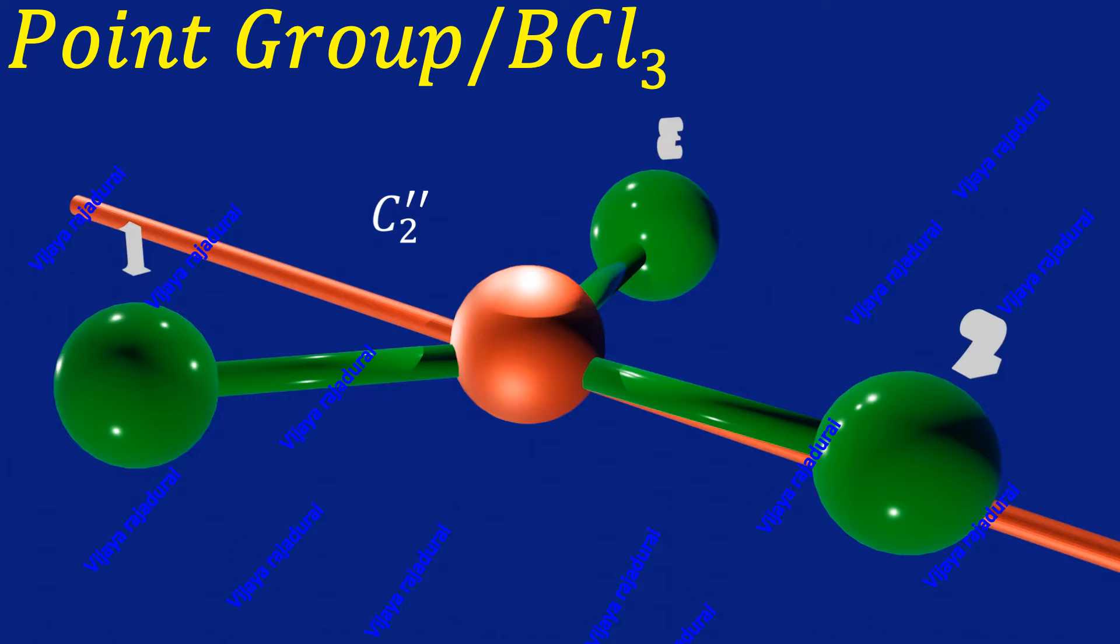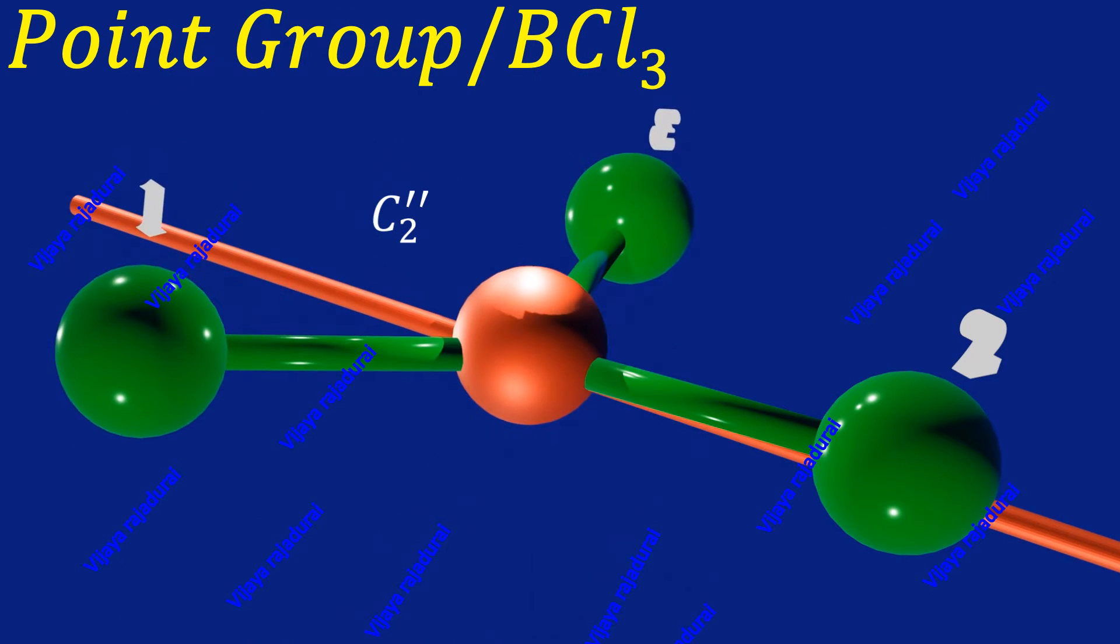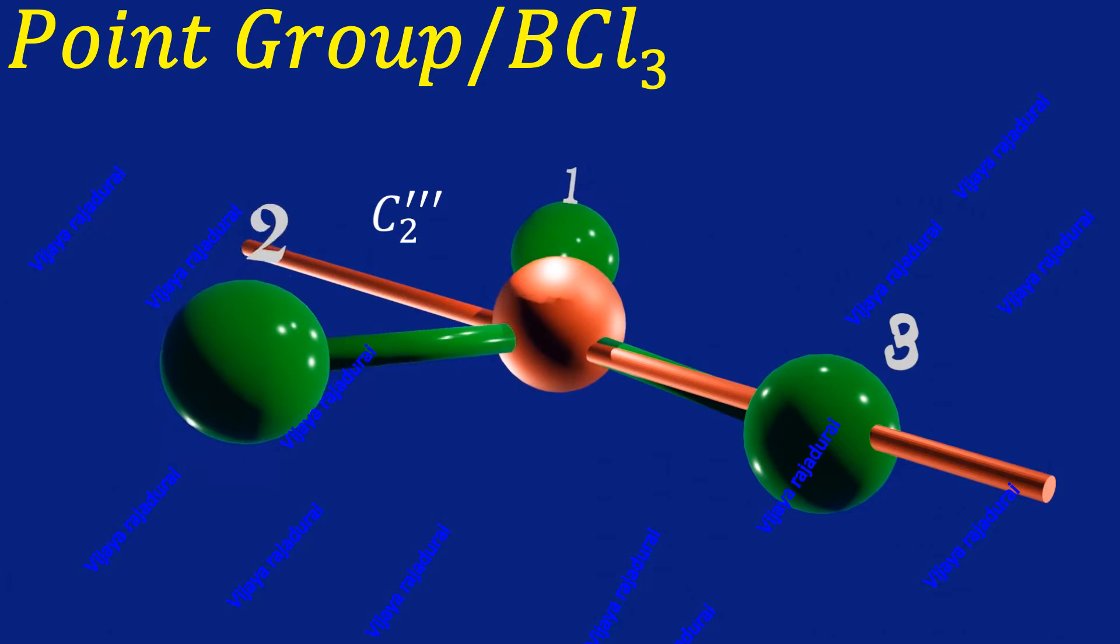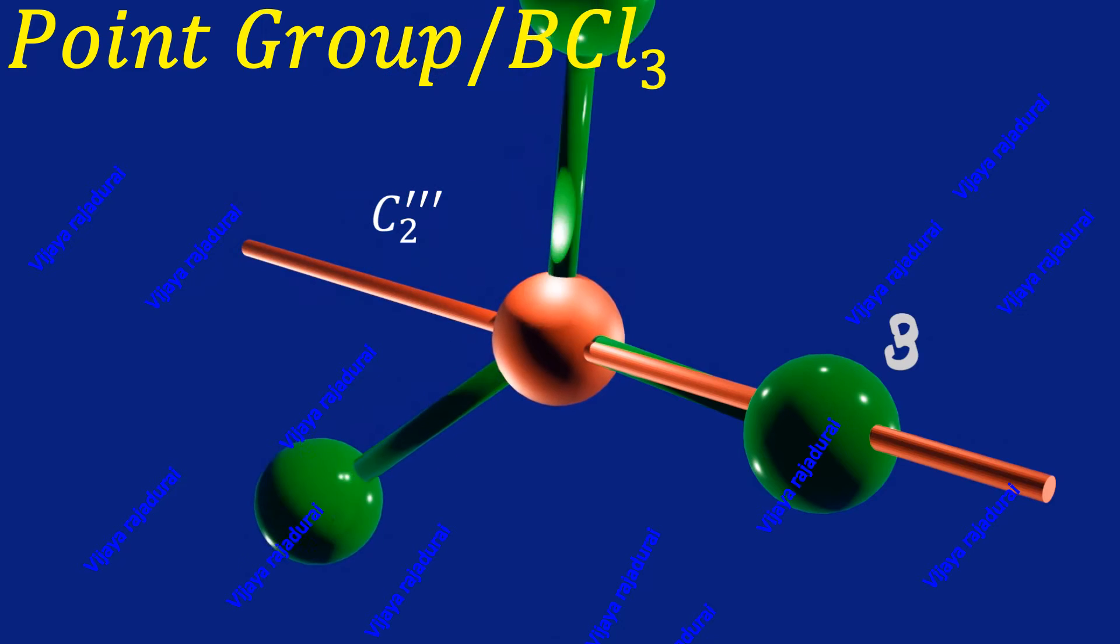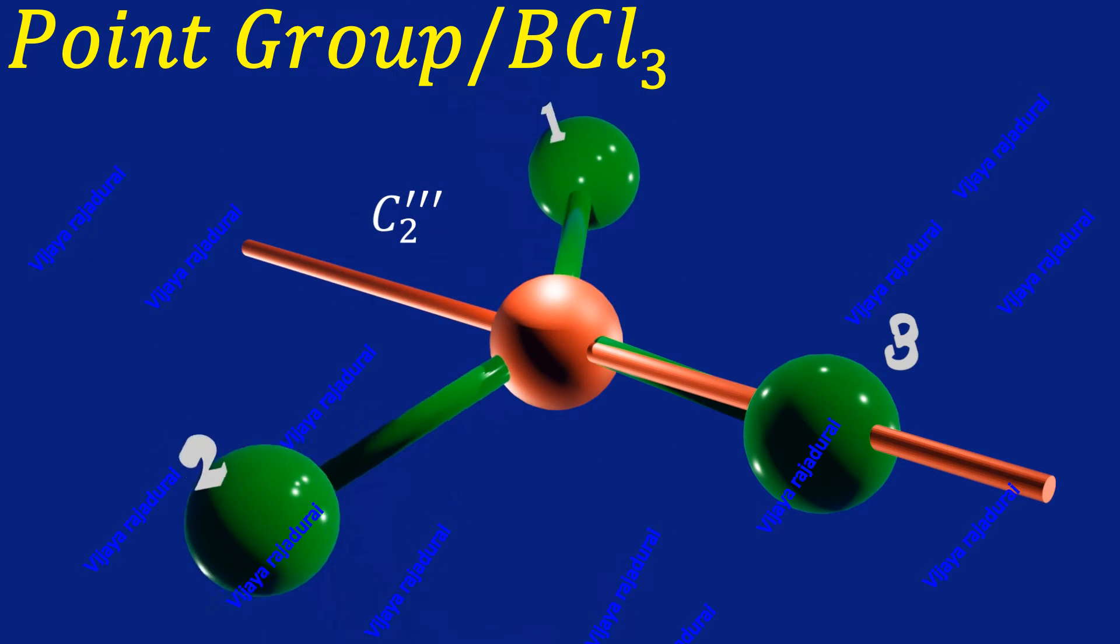Then the second C2 orientation about the second chlorine atom and boron atom, called C2 double prime. This is the third C2 orientation about the third chlorine atom and boron atom, called C2 triple prime.